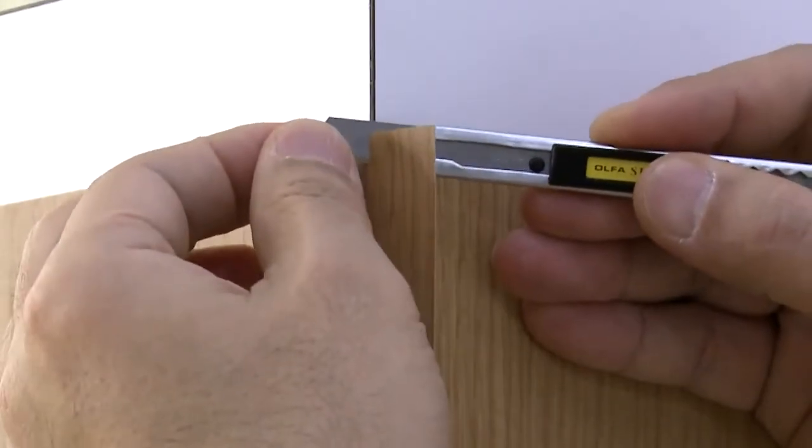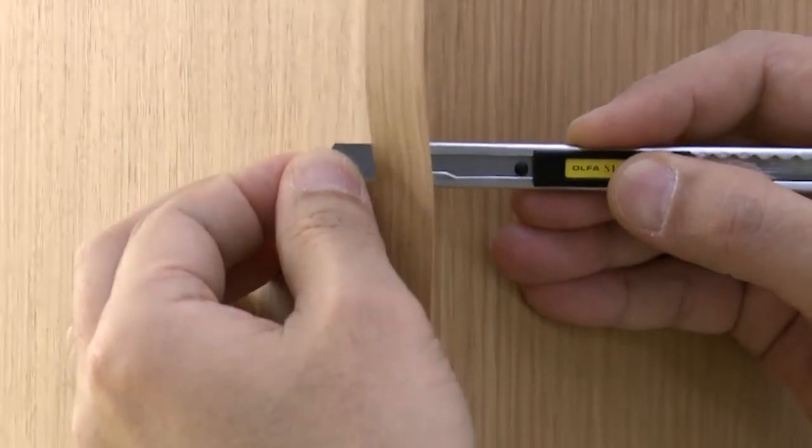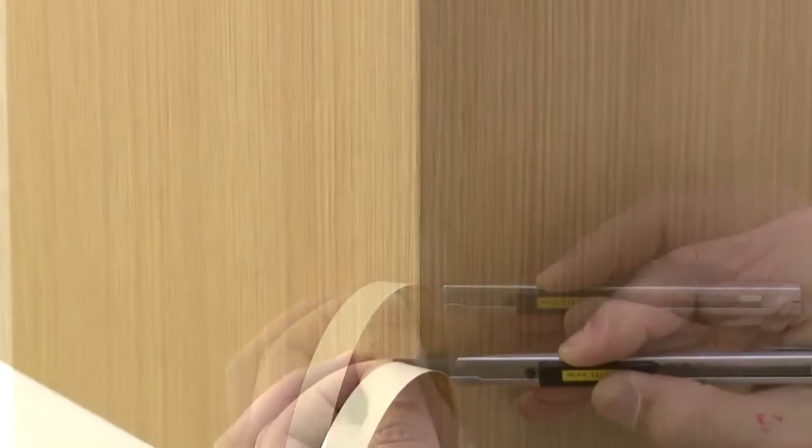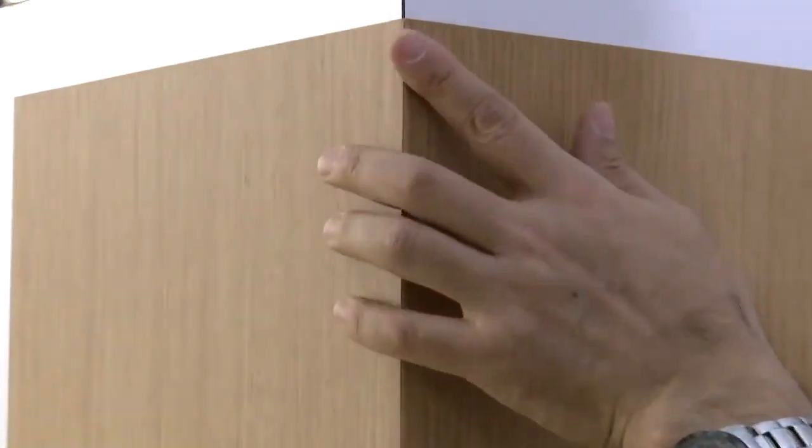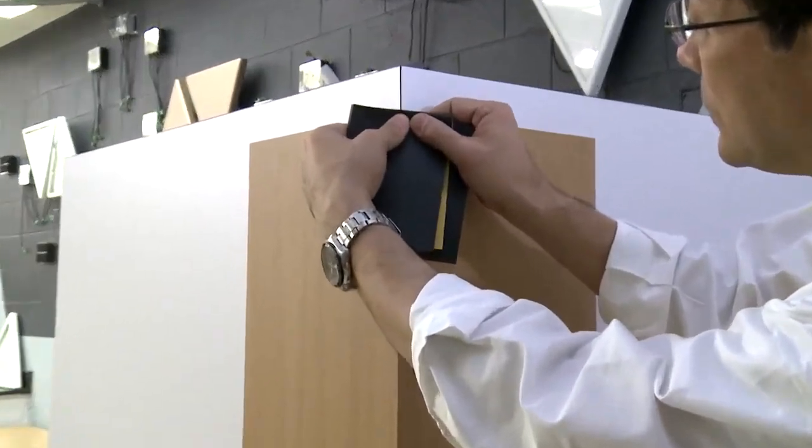Carefully hold the tip of the blade flat against the outside corner and draw it down through the film to cut off the excess film. Finish refining the cut edge by gently and lightly sanding any rough edges of the film.